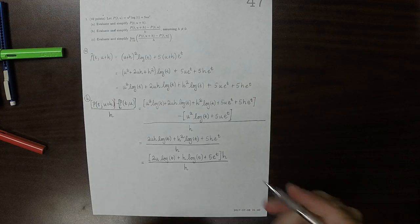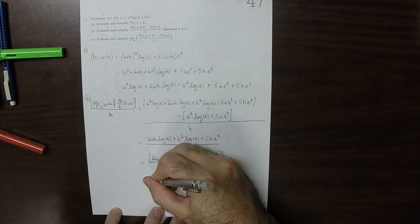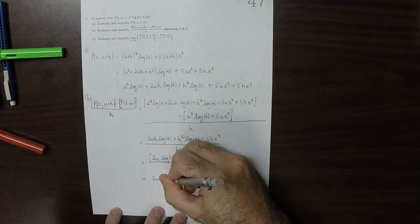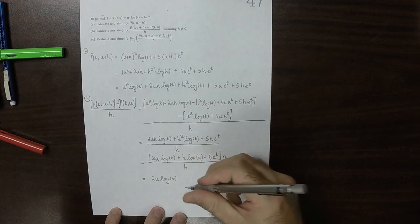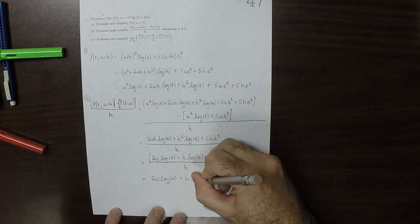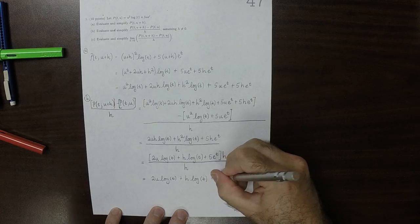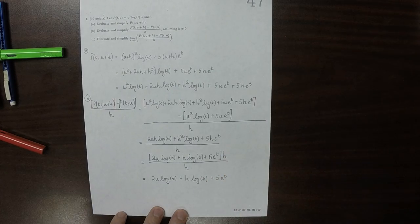And then, of course, the h's cancel, so we get 2u log t plus h log t plus 5 exponential t.